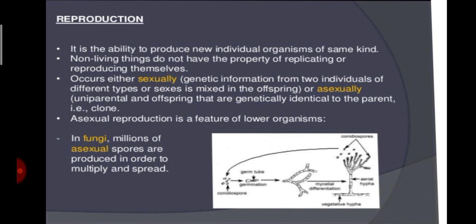Now let us study about reproduction. Reproduction is a characteristic of living organisms — it is the process of producing offspring. In multicellular organisms, the mode of reproduction is generally sexual, which involves fusion of two kinds of gametes to form an offspring. Some living organisms also reproduce by asexual means. For example, fungi multiply and spread very fast by producing millions of asexual spores. Filamentous algae and the protonema — the thread-like chain of cells of mosses — multiply by fragmentation.